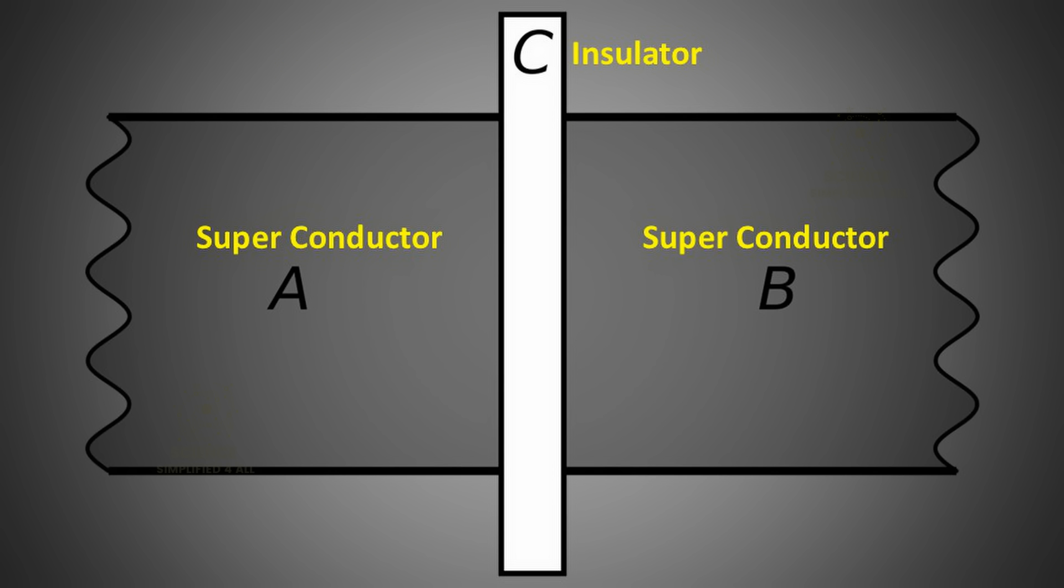Now, imagine we have two superconducting circuits separated by a very thin insulating layer. Normally, according to classical calculations, the presence of this insulator should completely block any current from passing between the two circuits. However, something remarkable happens. Even when there is no voltage across the insulator, a tiny current can still be observed flowing through it. This happens because the Cooper pairs from the superconductors can tunnel through the insulator by the process of quantum tunneling.